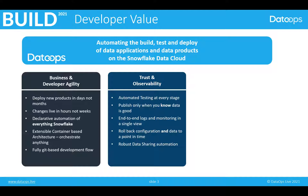It doesn't matter how good our automated testing is, at some point something will slip into production that we didn't want. Automated testing helps us prevent bad things getting into production, but the reality is eventually something will. So the ability to roll back not just our configuration and our code but also our data, using time travel inside Snowflake to a known good point in time, is absolutely critical. It makes developers a lot more comfortable knowing that if something bad does happen, they've got a tried and tested rollback method. Finally, data sharing is becoming an increasingly important part of how people share data within and outside their organizations, and there are significant challenges in testing that what I've put through a data share is actually what is visible on the other side of the share. So robust data sharing automation is a key part of that trust and observability.